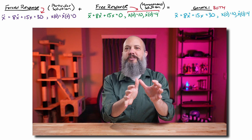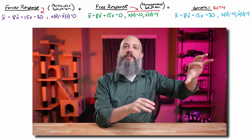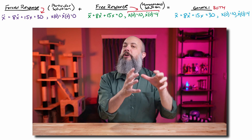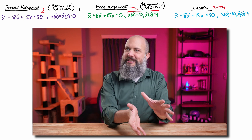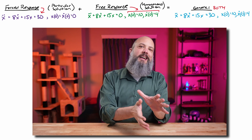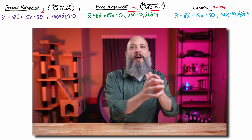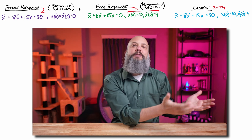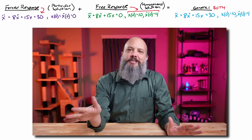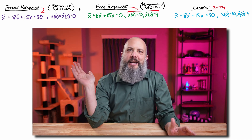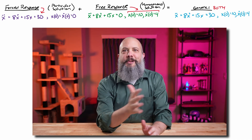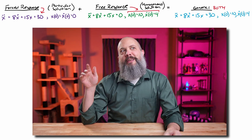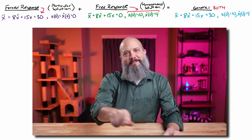The free response ignores the forcing function — sets the force equal to zero — but accounts for the initial conditions. When you combine those, the general solution accounts for both. For the Laplace transform, I'm not doing any calculus. I am only using the tables because that's the engineering way.